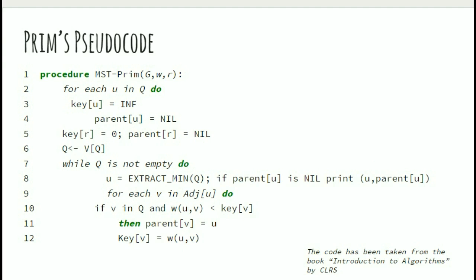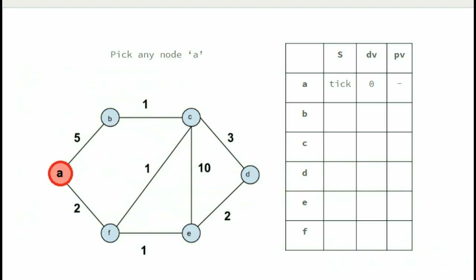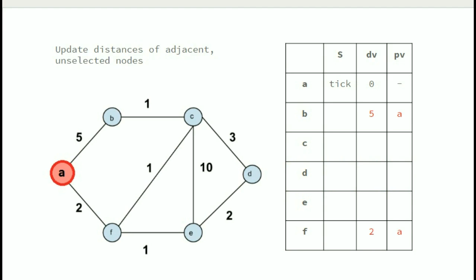Here is the pseudocode for Prim's algorithm taken from CLRS. We have an example graph. We start with vertex A. We update the distance of adjacent vertices of A. Here vertex B is at a distance of 5 from A, and vertex F is at a distance of 2 from A. The table is updated for A, where the parent PV of B and F is A.